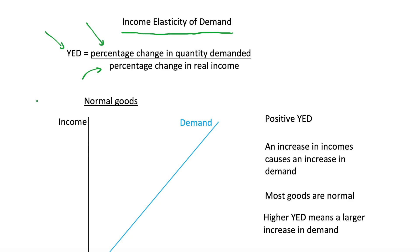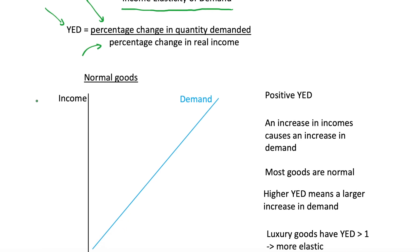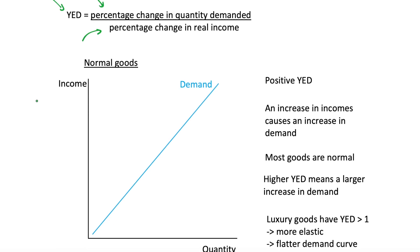In the previous video we went through an example which had a YED of 2, and we said that this was elastic. It was also a positive YED, and we can link this — what a positive YED means — to what we call normal goods.